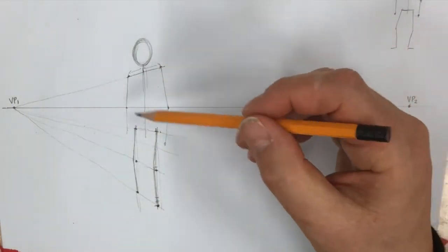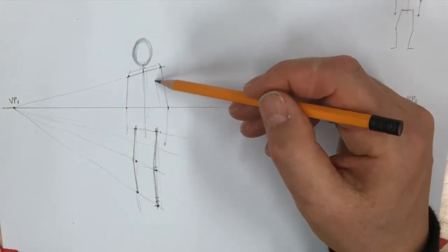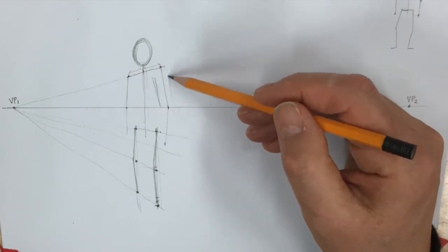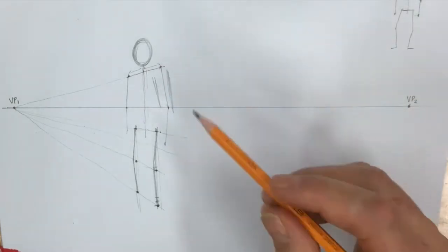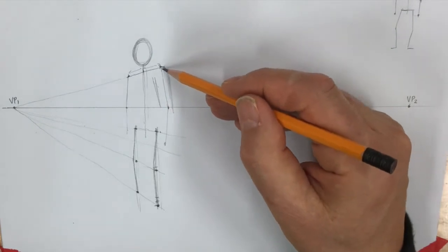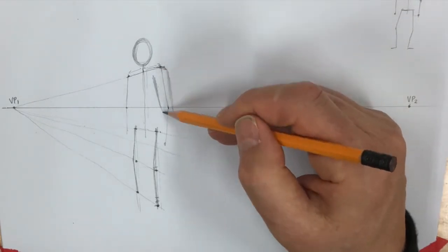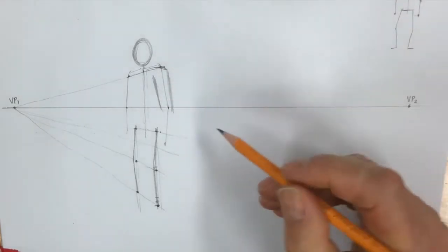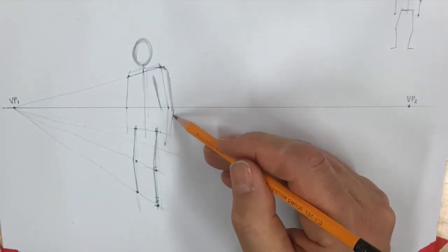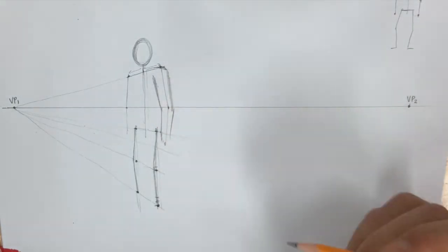So now I can put some meat on the bones, and the best thing to do is to actually start with the parts closest to you. So I'm going to start with this arm, and you've got to make sure that the arms are wider at the top and getting narrow as they get down to the bottom.